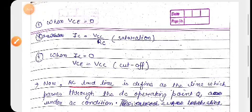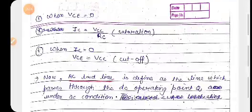The AC load line passes through the DC operating point Q under AC condition. The DC load line also passes through the DC operating point Q, which is the AC load line.